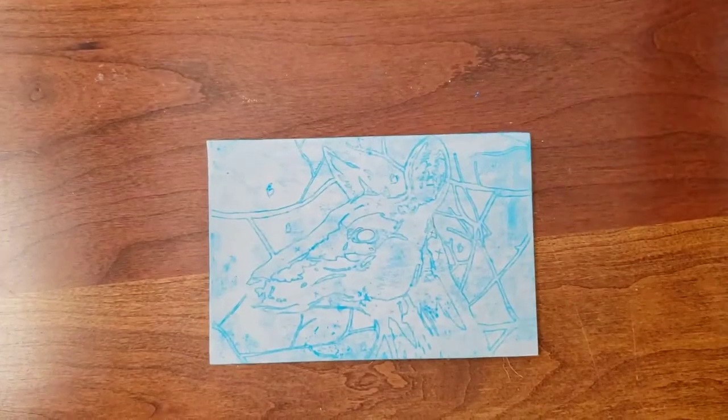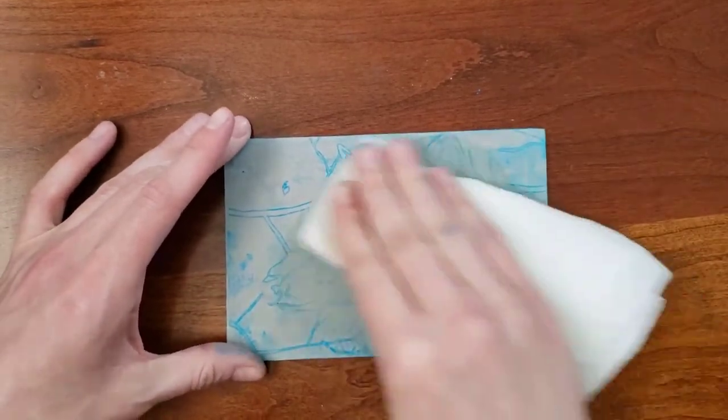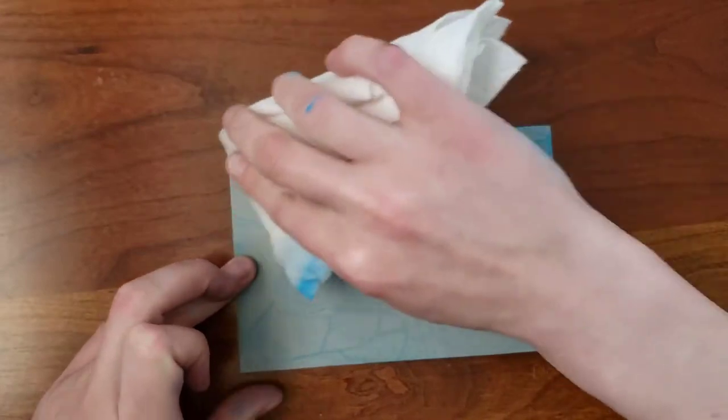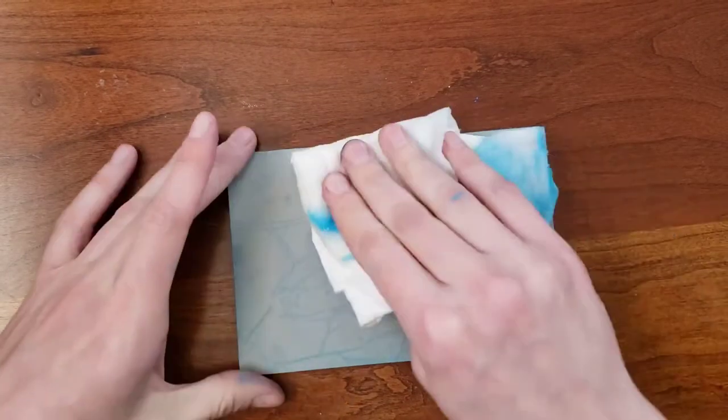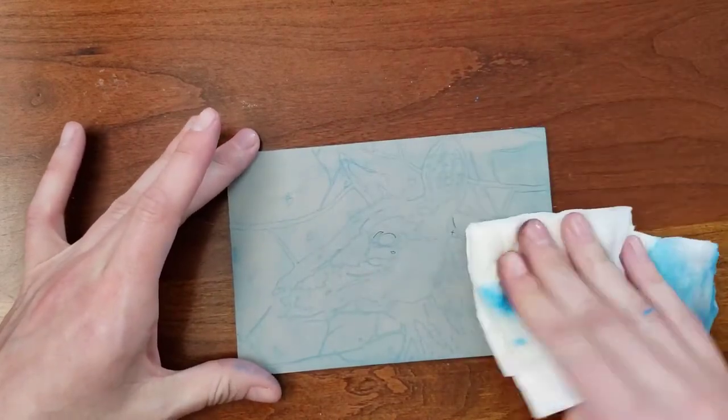I find the initial transfer too intensely vibrant and messy. So I like to take a damp paper towel and carefully wipe a little of the extra powder off. Test this in the corner first to make sure you aren't using too much water or too much pressure. You wouldn't want to accidentally wipe off everything.